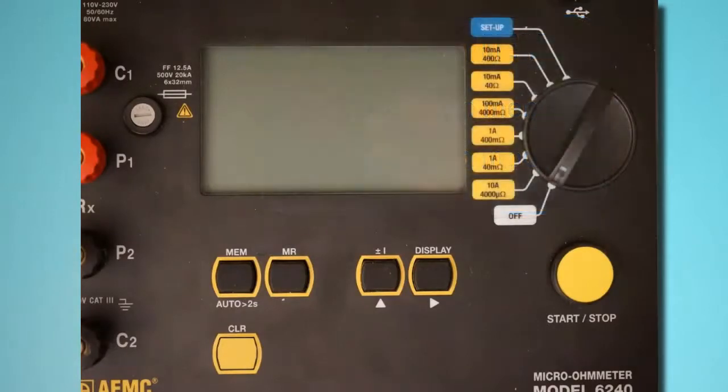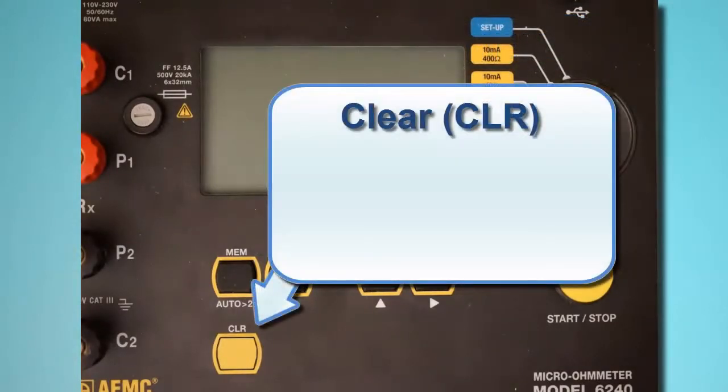Below the memory button is the CLEAR button, labeled CLR. This removes the selected test from the instrument's memory.